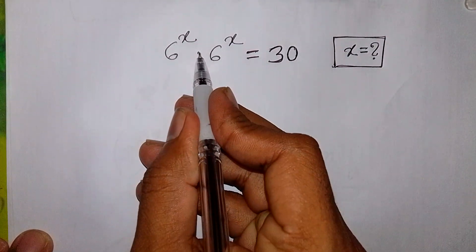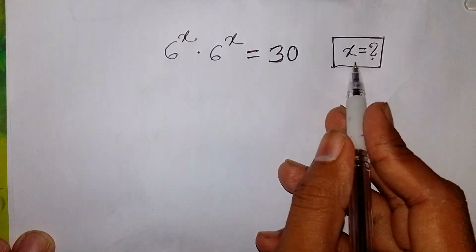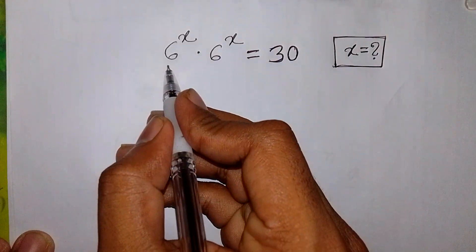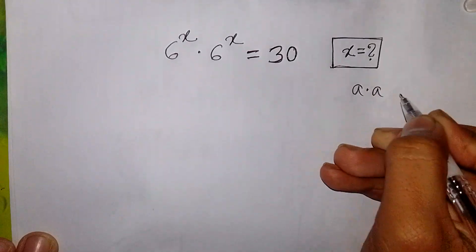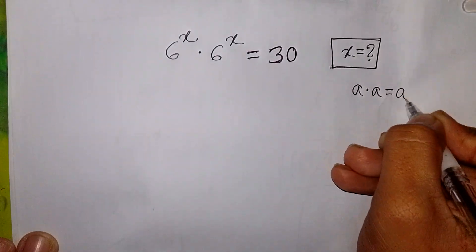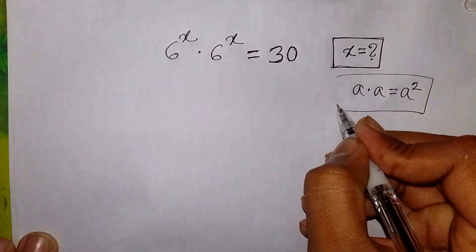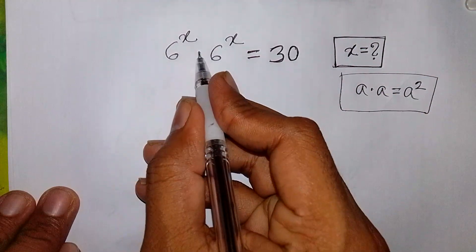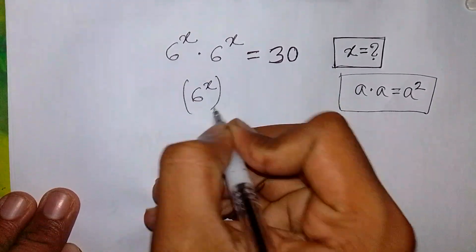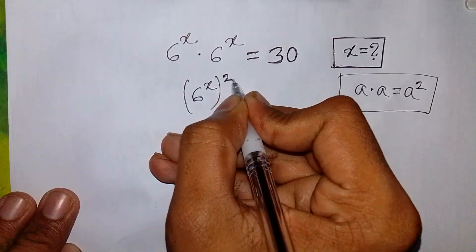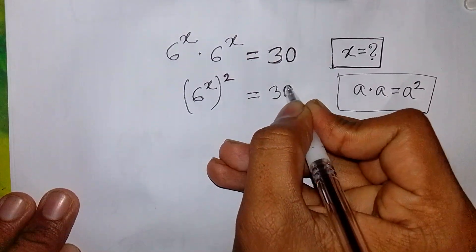6 to the power x times 6 to the power x is equal to 30. Find the value of x. Here, in the form of a times a is equal to a squared, this times this is the same as 6 to the power x, whole square, is equal to 30.